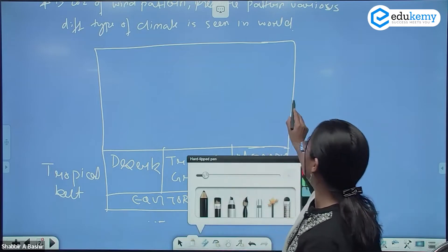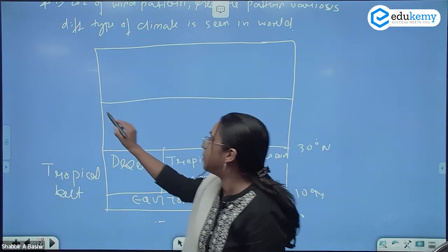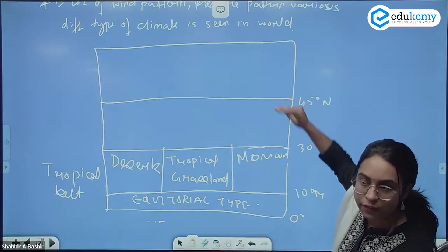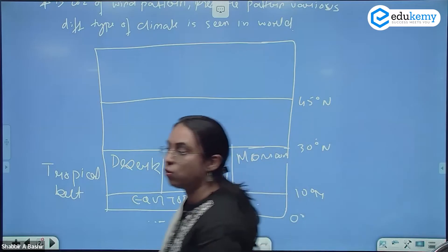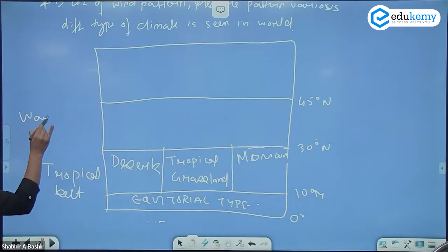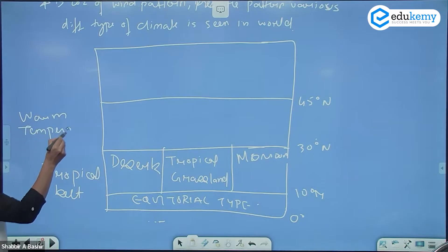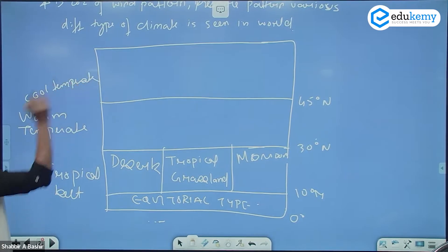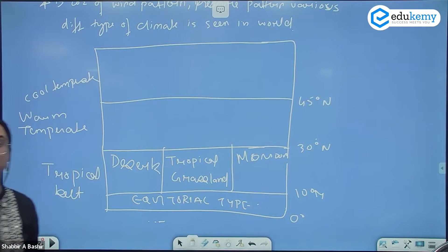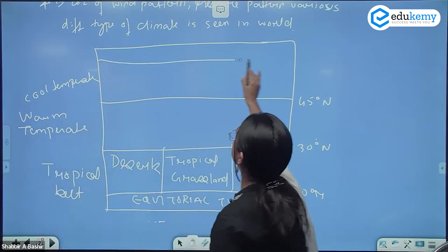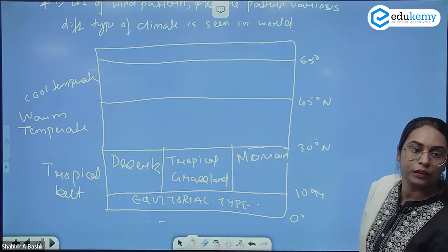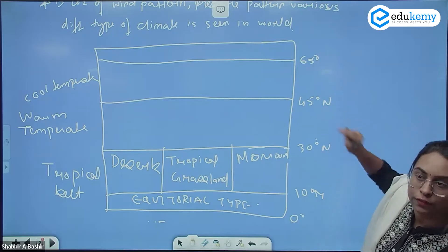From 30 degree north to about 45 degree north is the zone of warm temperate. I'm dividing temperate into two types: warm temperate regions from 30 to 45 degree, and cool temperate regions from 45 degree to 65 degree.